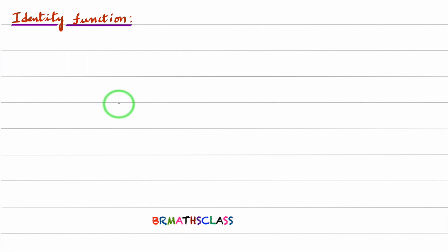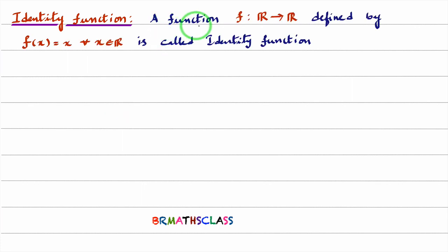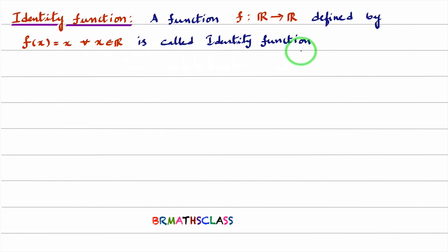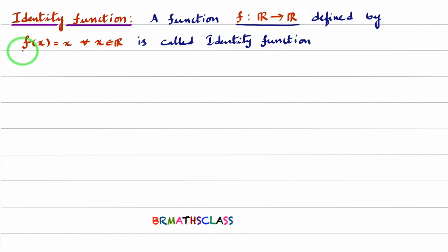We will learn the definition of identity function. A function f from the set of all real numbers to real numbers, defined by f(x) = x for any x belonging to R, is called an identity function. This function is from the set of all real numbers to real numbers, and the function is defined as f(x) = x for any real x.